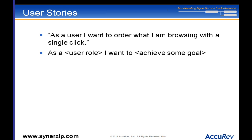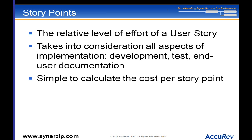Much like requirements, a defect or enhancement request needs some estimate of how much work it is so we can figure out the cost. A common thing to do in agile — and something I highly recommend — is to use story points. Story points do not equate back to time; we calculate time indirectly. Story points measure the relative level of effort of a user story, taking into consideration all aspects of implementation: development, test, end-user documentation, GUI work, back-end schema design, middle tier — whatever you need to do.